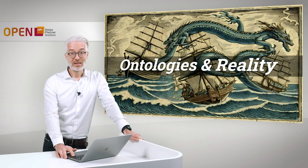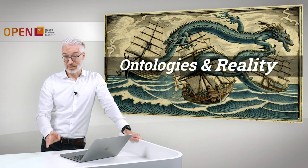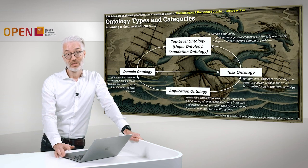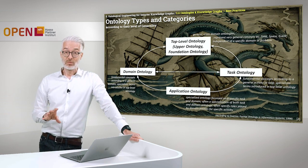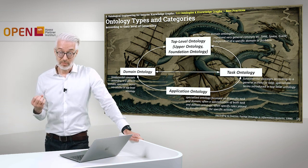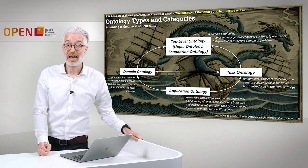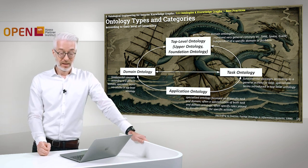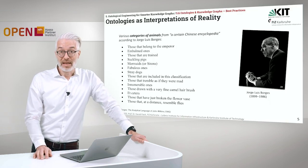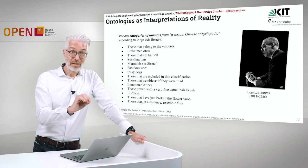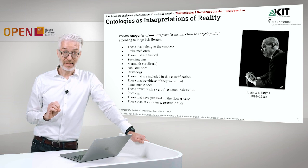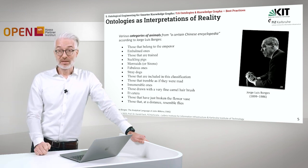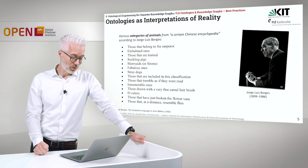If an ontology is an interpretation of reality, that's true. However, considering a level of generality, we have the possibility to create different types and categories of ontology. Nevertheless, we have to be careful. Ontologies are interpretations of reality. And what might happen is exactly what a very famous author, Jorge Luis Borges, explained once in an essay.